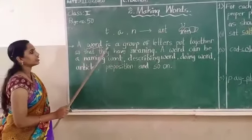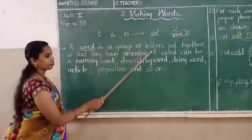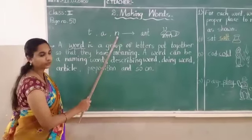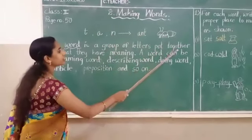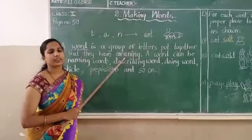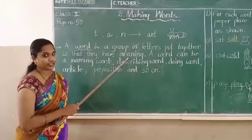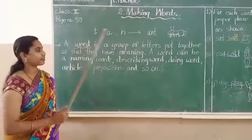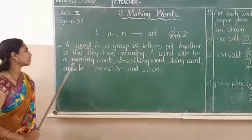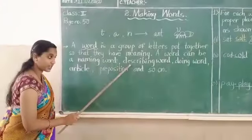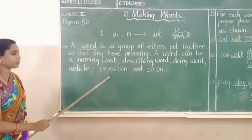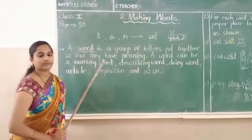See here. A word is a group of letters put together so that they have meaning. Some meanings we will get by grouping the letters. So that is a word, children. A word can be a naming word, describing word, doing word, article, preposition, and so on.